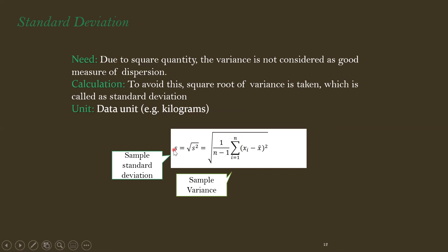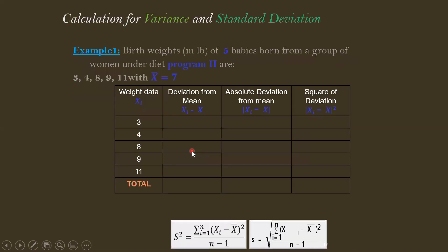To avoid the squared unit problem, we take the square root of the variance to get the standard deviation. So to measure standard deviation, we first compute the variance and then take its square root.